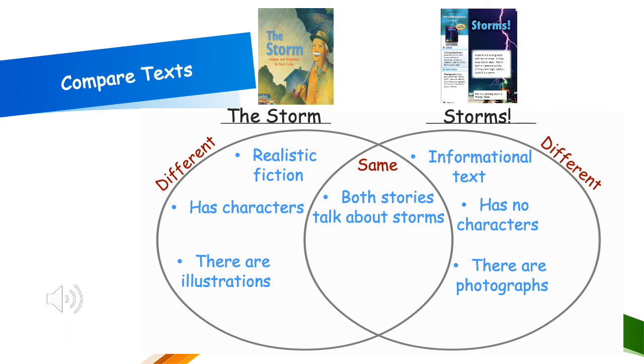Now, let's look at how the story, the storm, and the story storms are different. We write that on the outside part of the circle. So, let's look at genre first. The storm is a realistic fiction story. And the story storms is an informational text. The storm has characters. Can you think of anything else of how these two stories are the same or different?